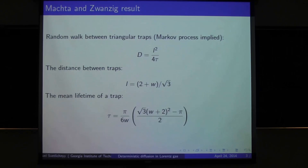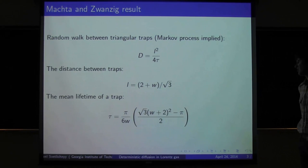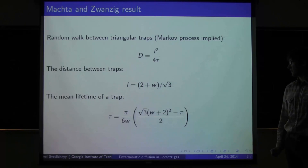When the horizon is finite, we do not have any trajectories that have infinite length. Calculation was done long ago in 1959. In the very first calculation, they consider that the diffusion process is just a random walk between the triangle traps.